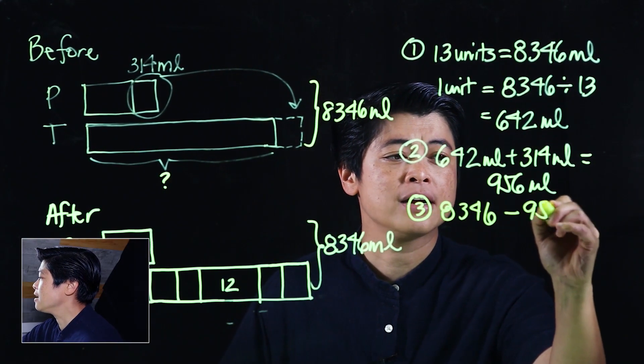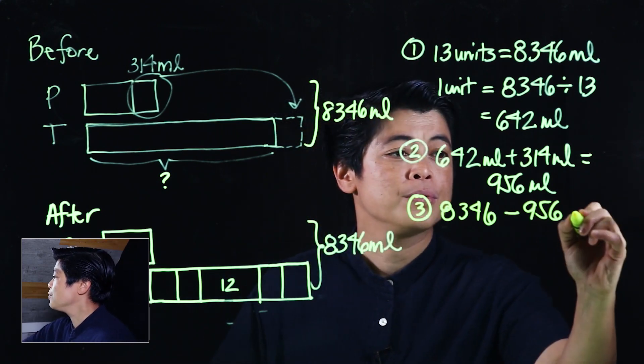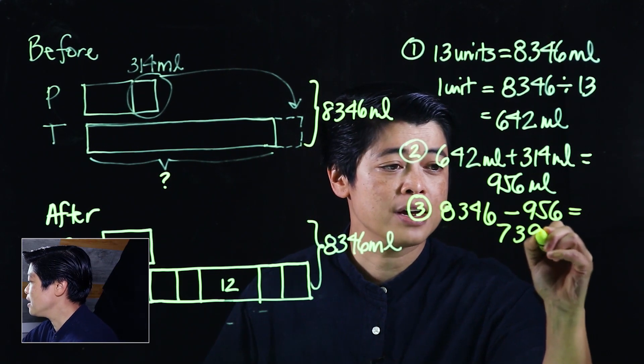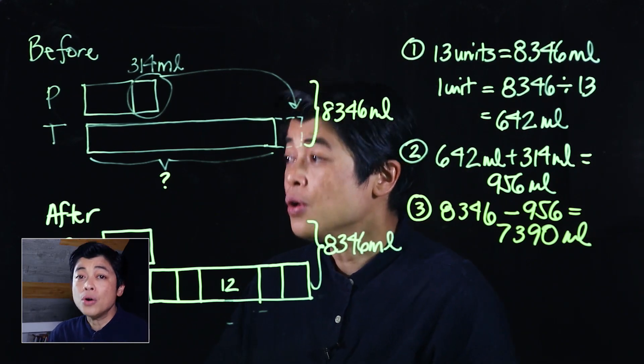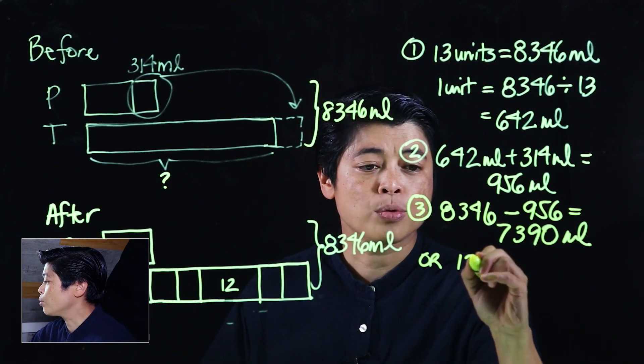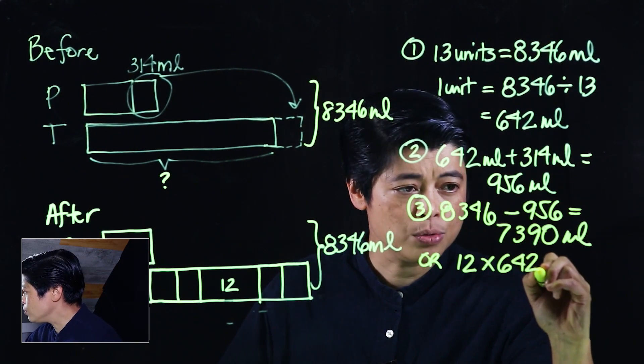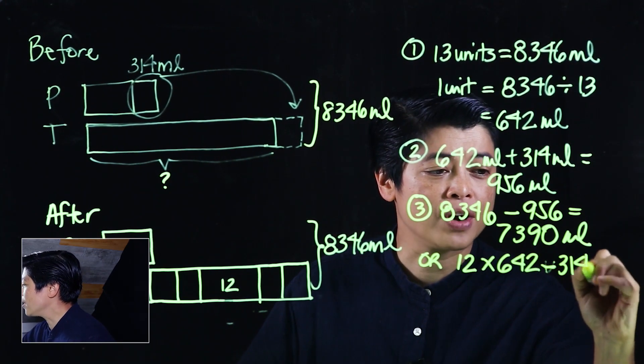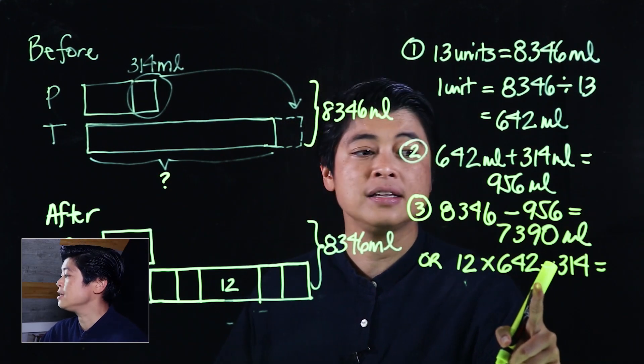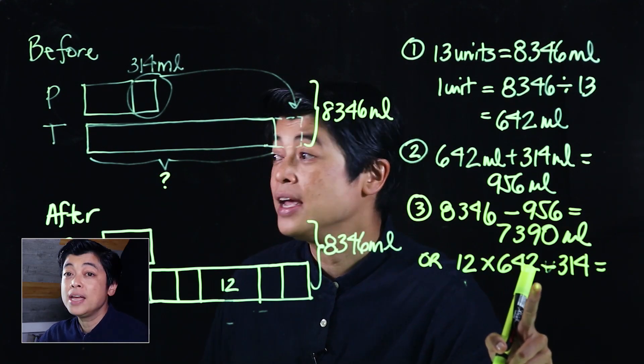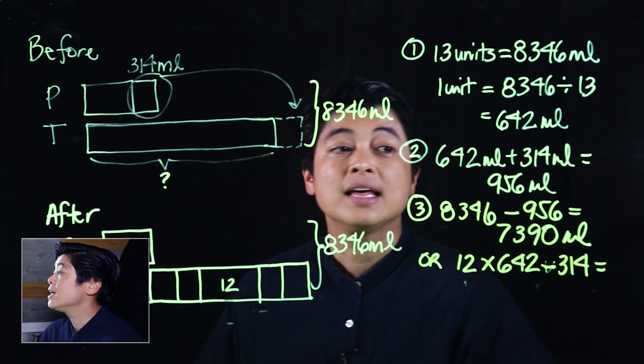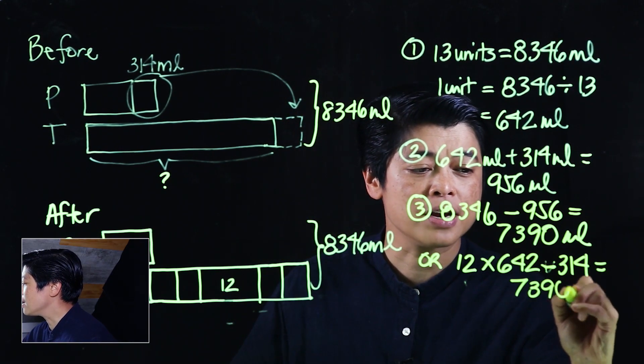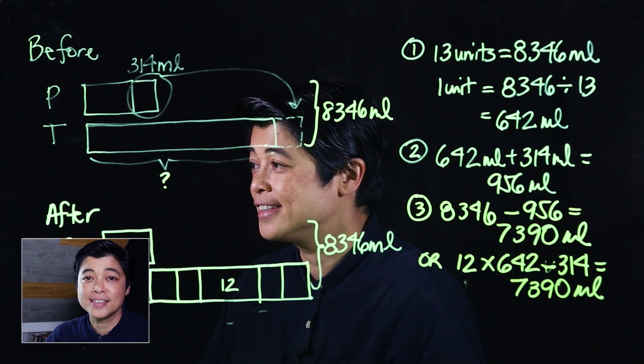This can be done either by taking 8,346 and subtracting 956 milliliters, which gives us 7,390 milliliters, or we can take 12 times 642 minus 314. If we take 12 times 642 and we remove 314, that also will give us 7,390 milliliters. That concludes Lesson 4 of Chapter 2, which also concludes the chapter. See you in the next chapter.